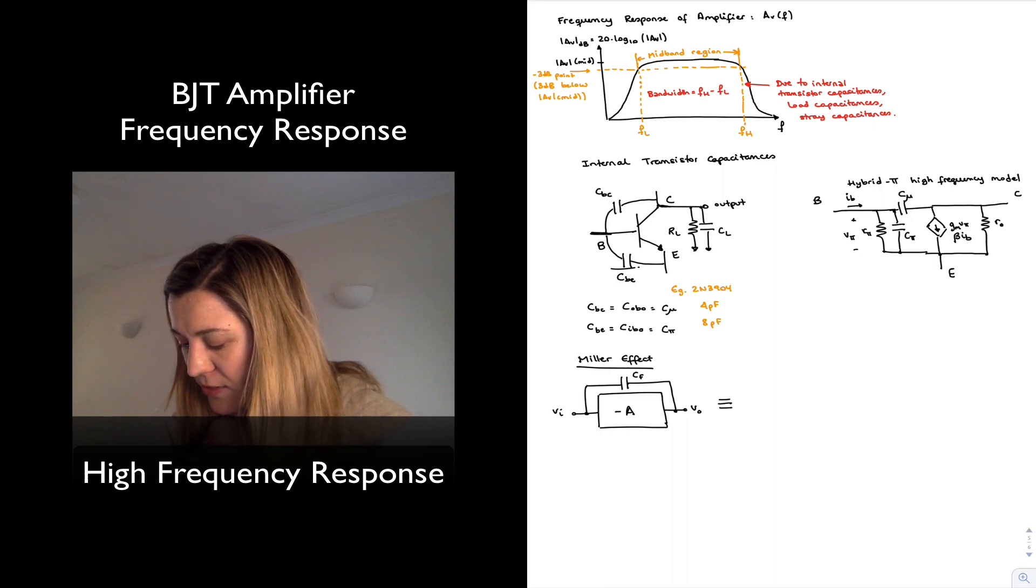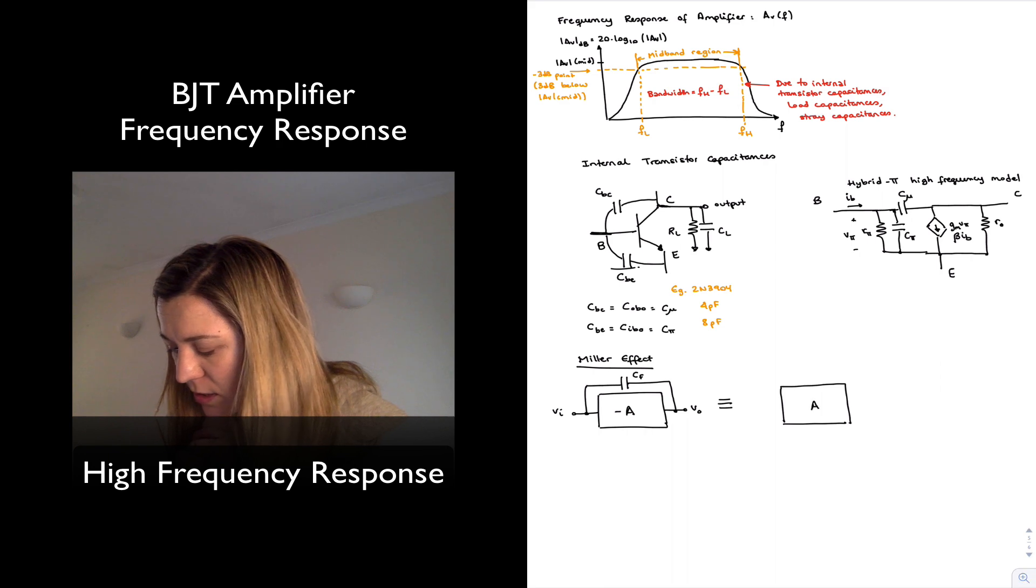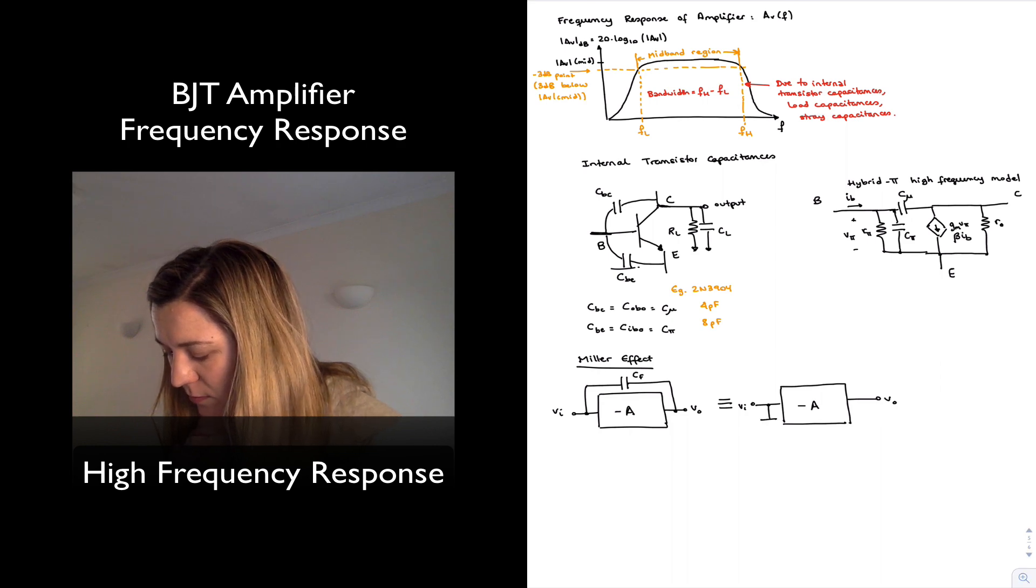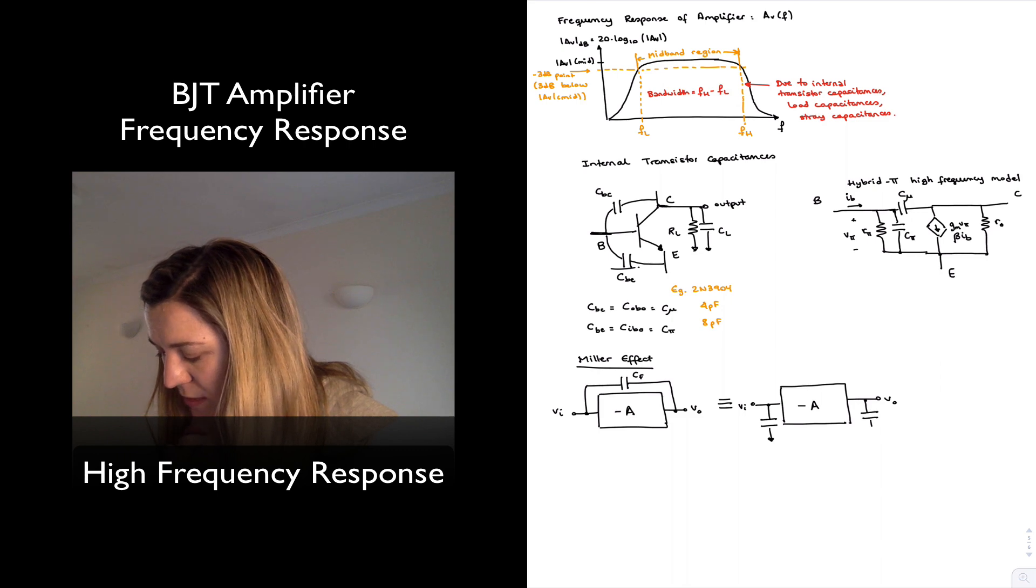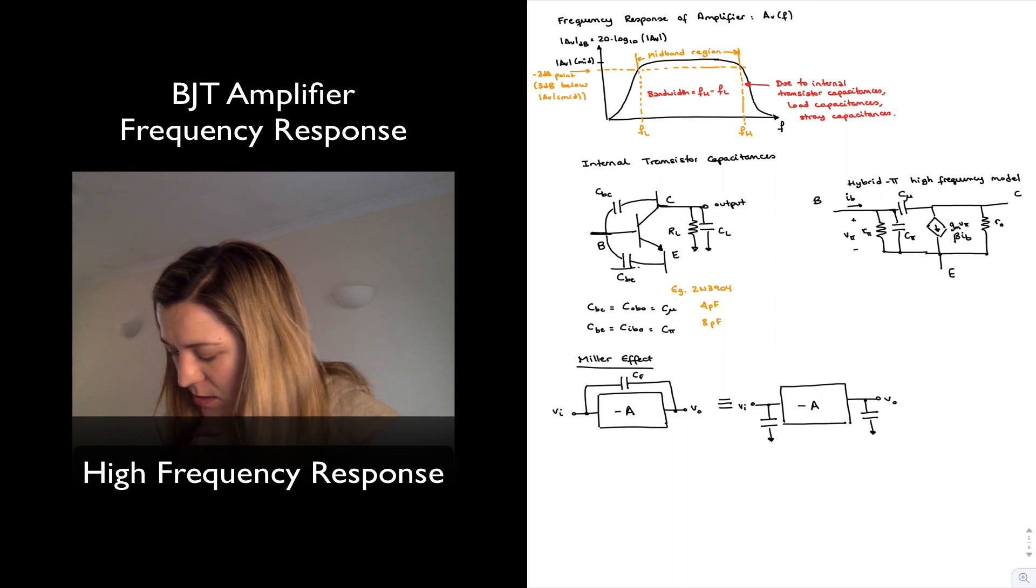So basically, this circuit behaves equivalent to a circuit with an amplifier, same amplifier, having two capacitances, which I'm going to call Cmin and Cmout.